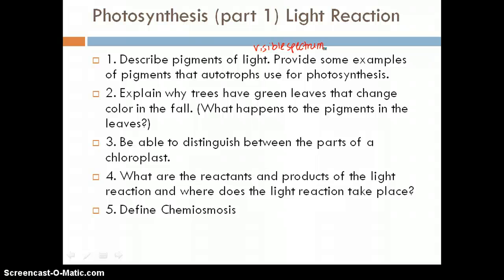In the fall, we'll see the pigments change and we'll start to see the reds and the yellows come out because chlorophyll stops functioning. Explain why trees have green leaves that change color in the fall. So the pigments in the leaves, the chlorophyll stops working basically, and that allows for the other pigments to be reflected or what we see.